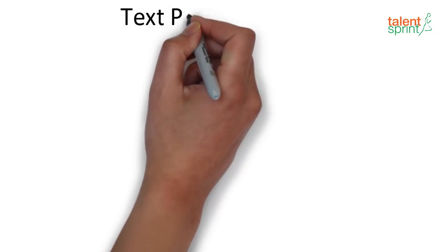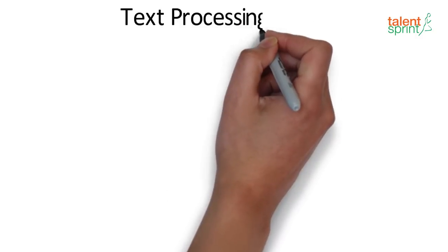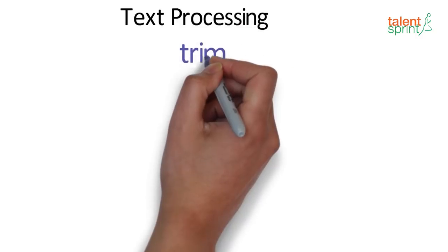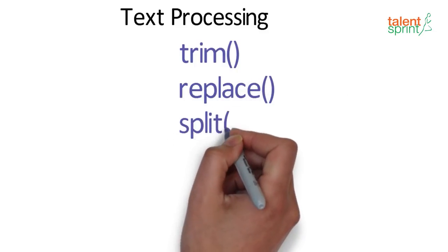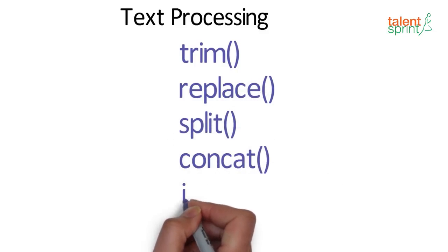Finally, we have text processing. A very large list of methods fall under this category. To name a few, we have trim, replace, split, concat, join, and more.